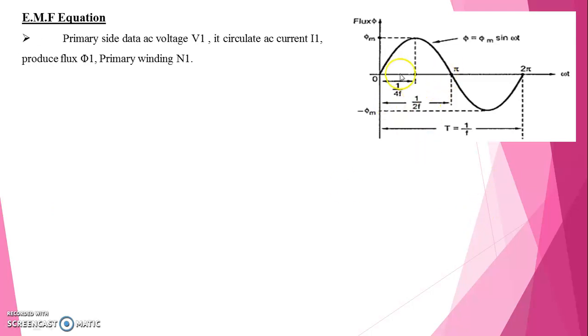Let us take EMF equation. Look at the waveform. In x-axis we have taken omega t radian per second, time in radians, and in y-axis we have taken flux phi. We have drawn one full cycle of sine wave. The maximum flux is phi m and the minimum flux is minus phi m. So phi is equal to phi m sine omega t.